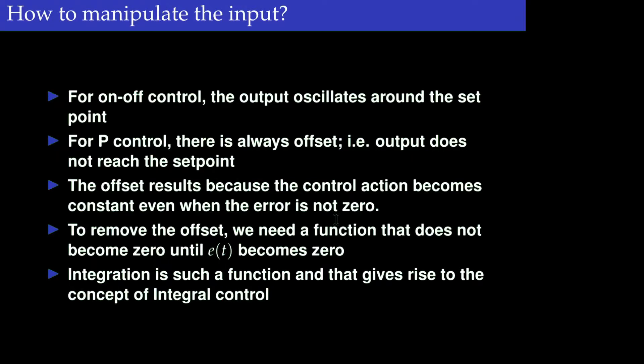We have seen on-off control and P control. For on-off control, the output oscillates around the set point and the output is never steady at the desired value. For P control, the main problem is with the offset, meaning that the output really does not reach the set point value. The offset results because the control action becomes constant even when the error is not zero.